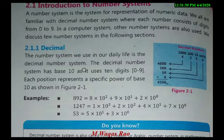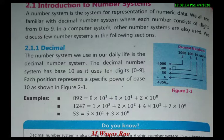The decimal number system has a base of 10. It uses 10 digits from 0 to 9. Each position represents a specific power of base 10. For example, if we take the number 4000, the rightmost digit represents units, then tens, then hundreds, and then thousands.